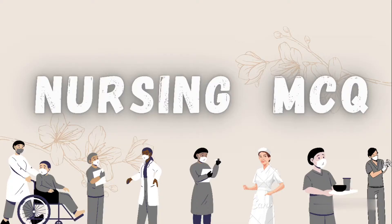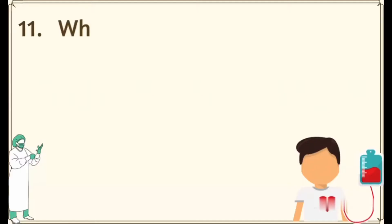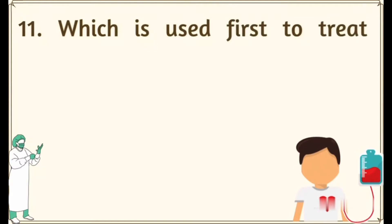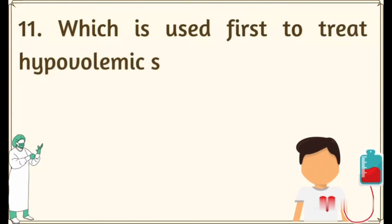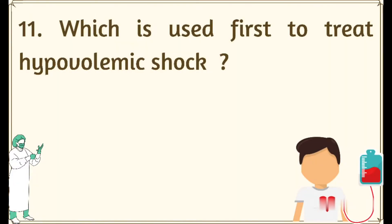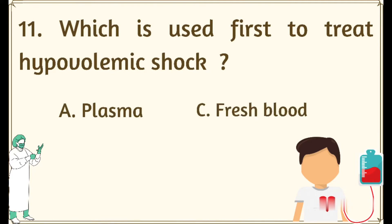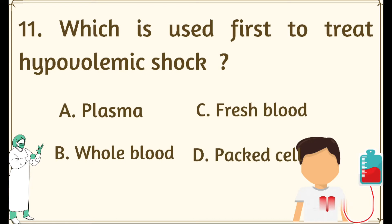Question number 11: Which is used first to treat hypovolemic shock? Option A: plasma, Option B: whole blood, Option C: fresh blood, Option D: packed cells. The right answer is Option B: whole blood.